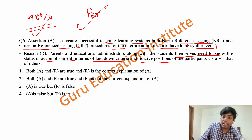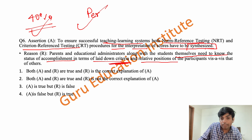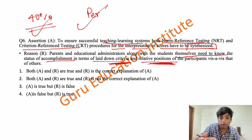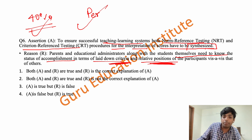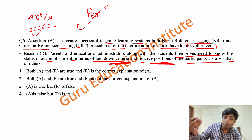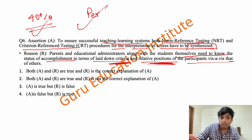They need to understand both the relative position and criteria — according to students, parents, and educational institutes — how the child performs relative to criteria and in comparison to other students.